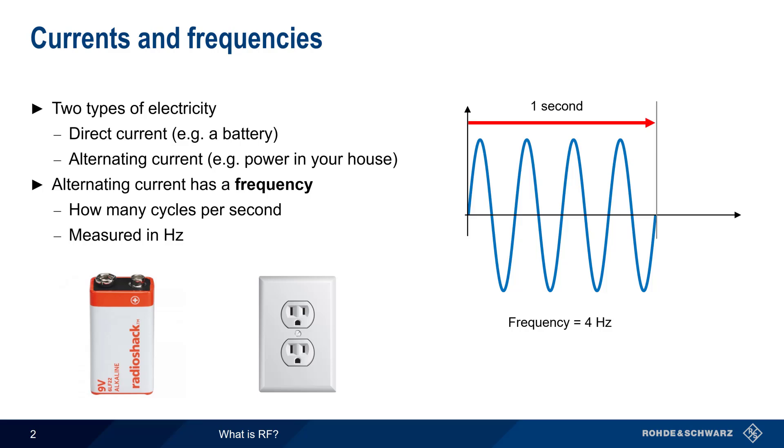In the United States, the frequency of AC power in wall outlets is normally 60 hertz, meaning the current completes 60 cycles in one second.